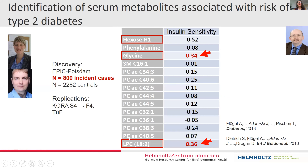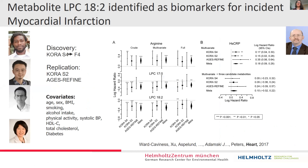I would like to draw your attention to lysoPC 18:2, which was not only associated with the incidence of type 2 diabetes, but also with the incidence of myocardial infarction in further follow-up work. This highlights one of the powers — but also an area where we need to further invest — namely, if we want to use metabolites as diagnostics, we need to make them specific for certain diseases.